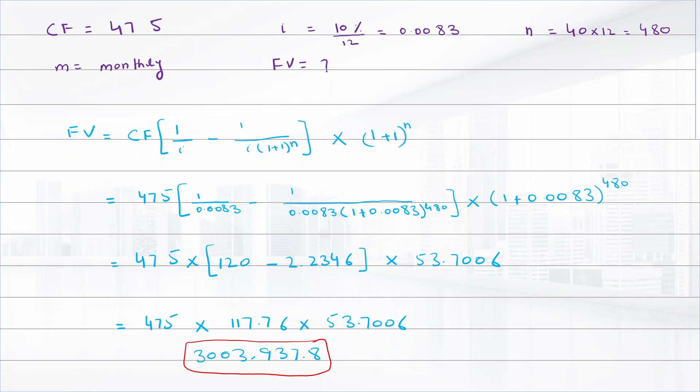So if you invest $475 into a retirement account and the interest is 10% and the compounding frequency is monthly and the N is 40 years, then you will have $3,003,937.8 in your account after 40 years.